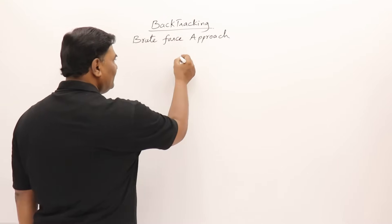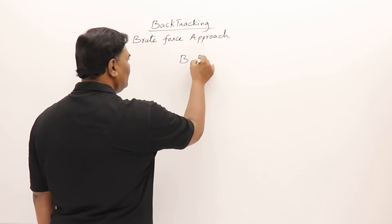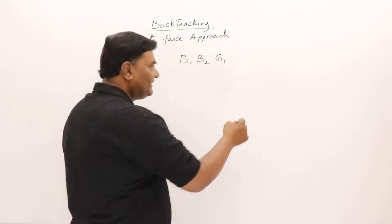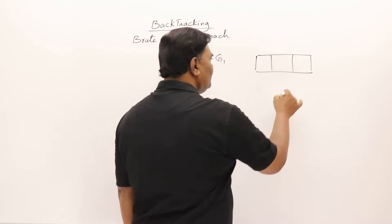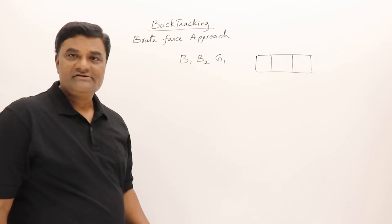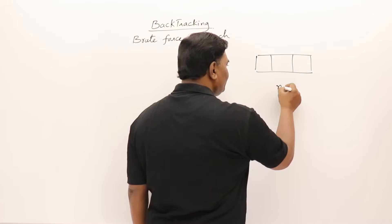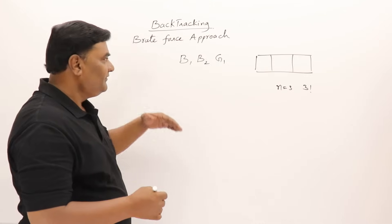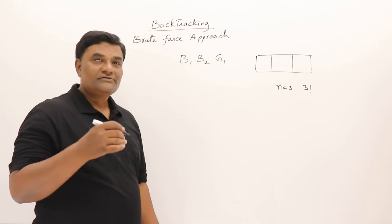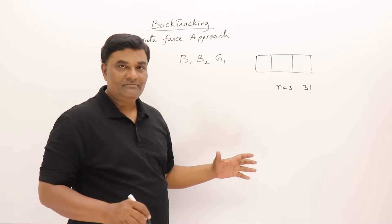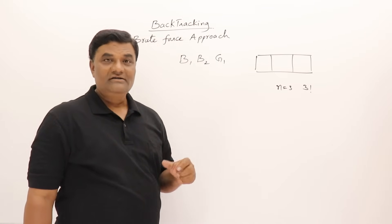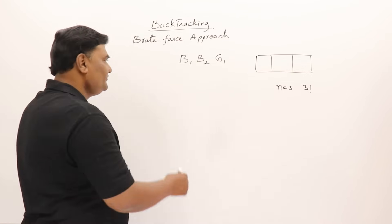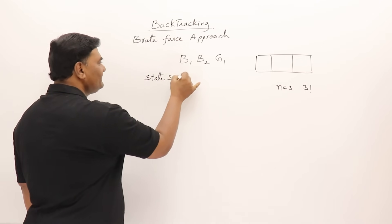Let us take an example. If there are three students — two boys and a girl — and there are three chairs, we have to arrange them in those three chairs. In how many ways can we arrange them? The number of students is three, so we can arrange them in three factorial ways, that is six ways. Now we want to find out all possible arrangements. The solution can be represented in the form of a tree, called a solution tree, which we also call a state space tree.